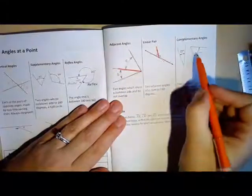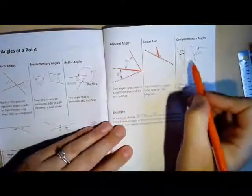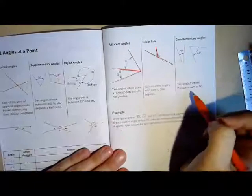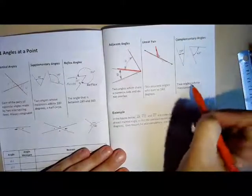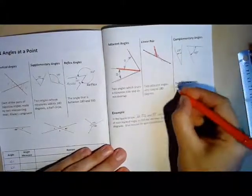And then complementary angles, C, are two angles whose measures sum to 90 degrees or a right angle. A right angle symbol is this little right triangle right here.